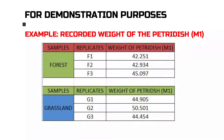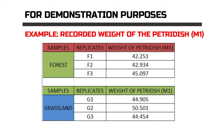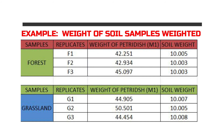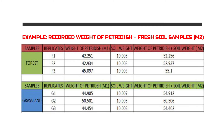For calculation purposes, let us assume the data displayed on the screen. First is the weight of the petri dish, which is M1. Next is the weight of the petri dish and the weight of soil added. When you add M1 and the weight of soil added, you get the M2 value — which is the weight of the petri dish plus the fresh soil samples. This is how you obtain the M2 values.